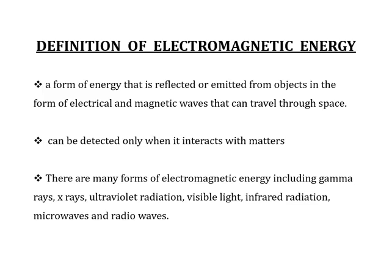Electromagnetic energy is a form of energy that is reflected or emitted from objects in the form of electrical and magnetic fields that can travel through space. It is also referred to as EMF. Electromagnetism is a form of energy which can be reflected, emitted, and transmitted. Electromagnetic energy can be detected only when it interacts with some kind of matter.